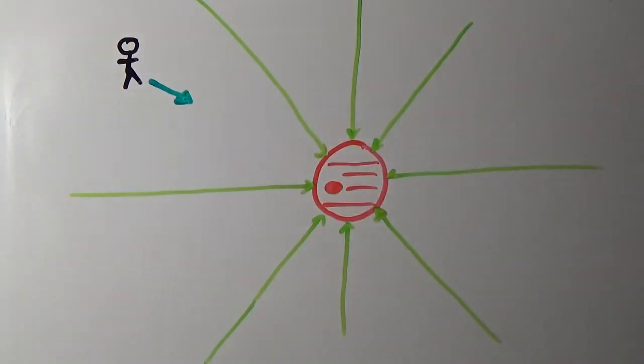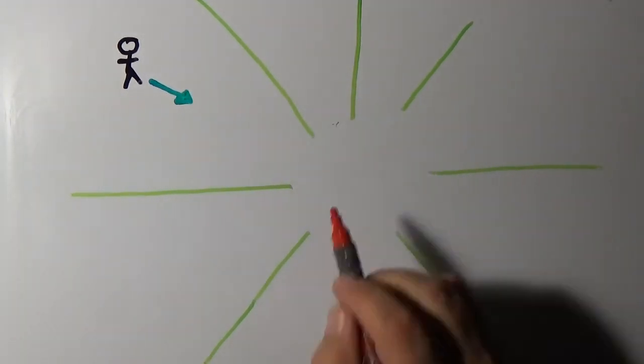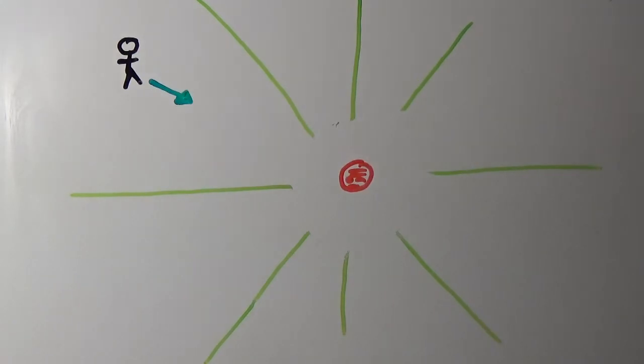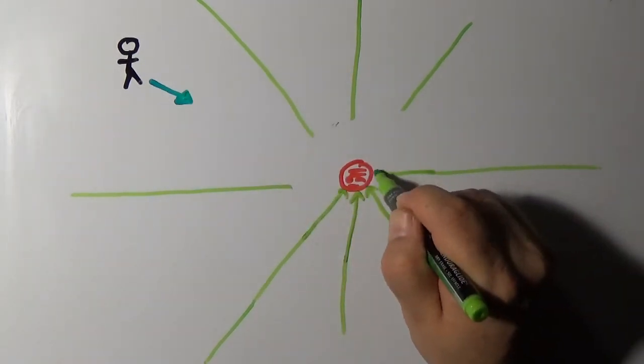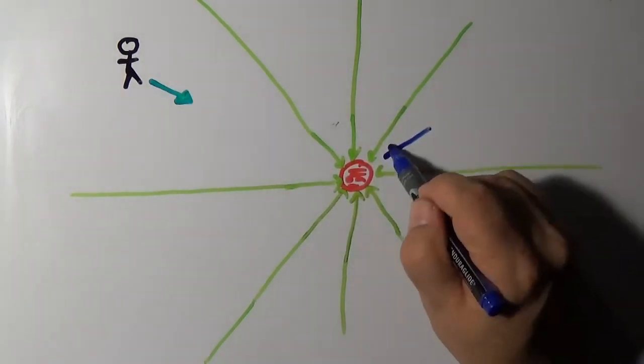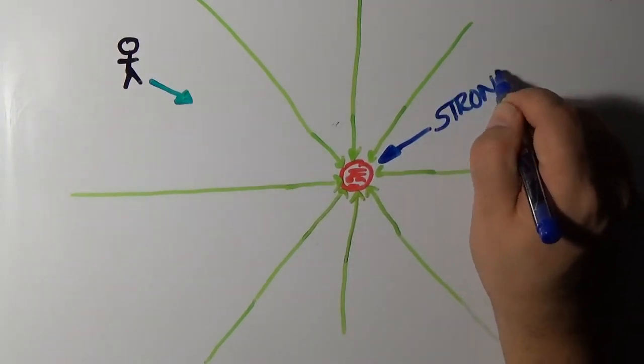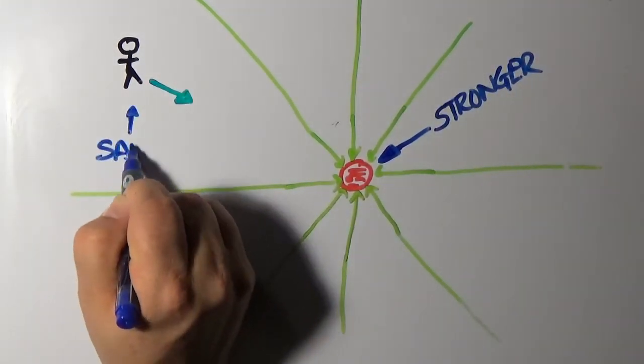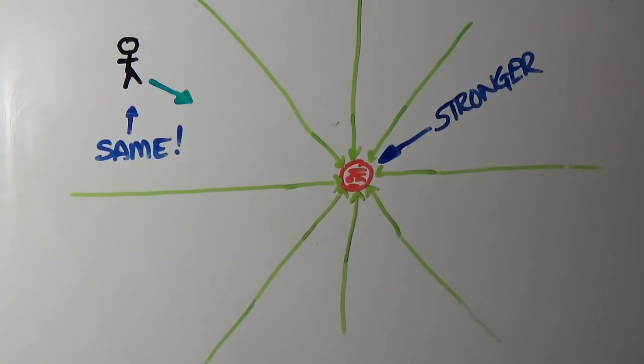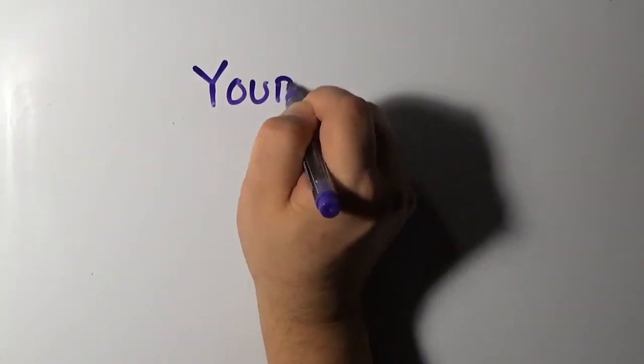But what if I shrink Jupiter down, keeping the same mass but making it smaller? Near Jupiter, the field lines get closer together, so the gravity gets stronger. But out where you are, nothing has changed. The gravity you feel stays the same. This will be important later when we talk about black holes.